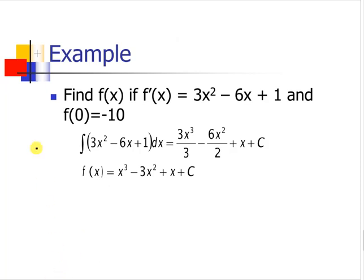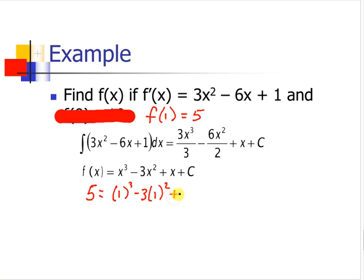Now let's say, for example, instead of giving this initial information here, we were given f of 1 equals 5. Let's say that was the information we were given. So in this case, we would put 5 in for f of x and 1 for each of our x's and solve for c.